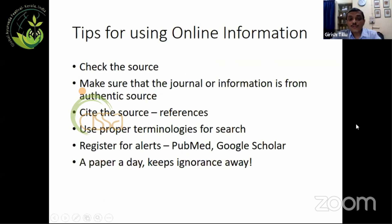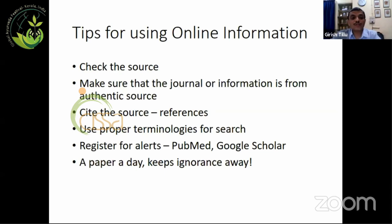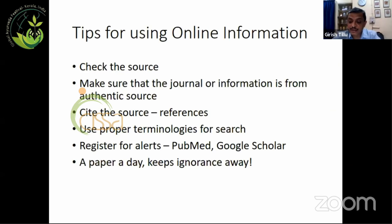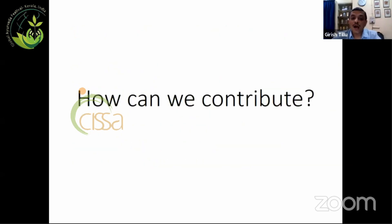Tips for using online information: check the source, make sure the journal or information is from an authentic source, cite the source as reference, use proper terminologies for search, register for alerts and use Google Scholar. A paper a day keeps our ignorance away — it is important to read at least one paper a day.